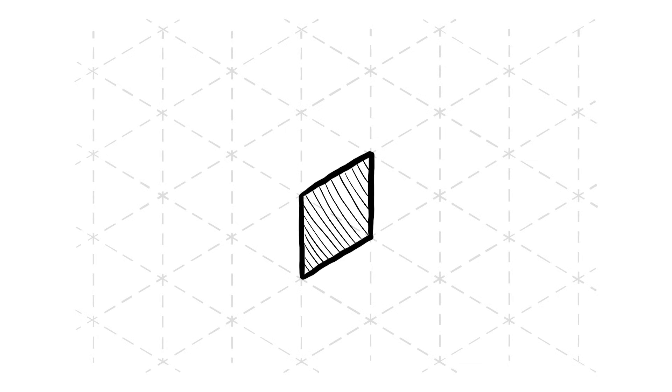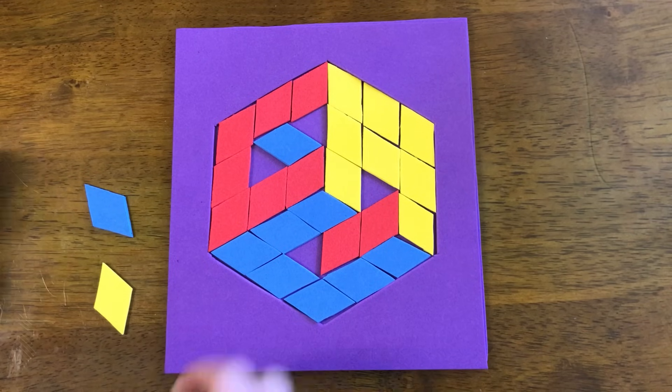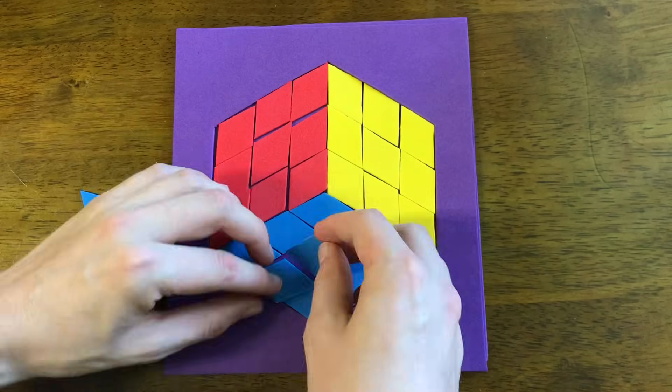Each rhombus is two equilateral triangles, so the only way you could really mess it up is if you separate two of the triangles. Even then, it's pretty straightforward to fix as long as you're trying to fill the empty space.